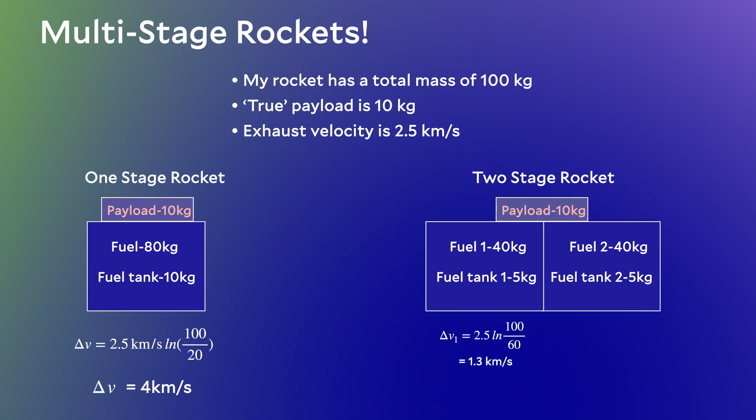Now I jettison the empty first fuel tank — those 5 kilograms — and start burning fuel in the second tank. I can apply the rocket equation again, but this time my initial mass is where I ended the last burn: 60 minus the 5 kilograms of fuel tank we just tossed away, so 55 kilograms. The rocket equation for the second burn is: delta V equals 2.5 km/s times the natural logarithm of 55 over 15. The final mass is 15, because 55 minus the 40 kilograms of fuel burned equals 15 — that's the payload plus the second empty tank. Plugging in those numbers gives 3.2 kilometers per second.